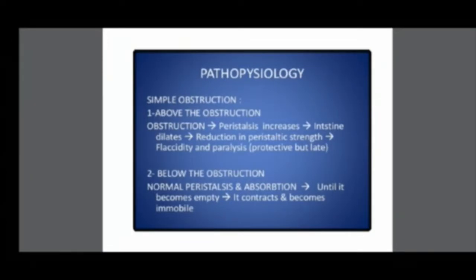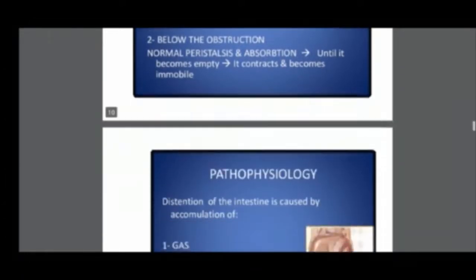In obstruction, above the obstruction the peristalsis will initially increase with reverse peristalsis. After that, there will be a reduction in peristaltic strength, flaccidity, and paralysis. Below the obstruction, normal peristalsis and absorption continue until the bowel becomes empty, contracts, and becomes immobile.